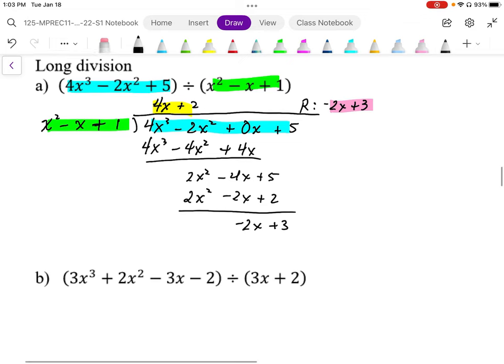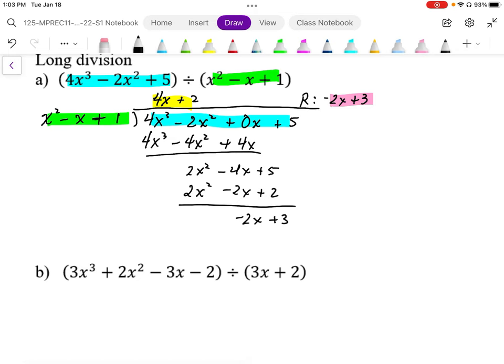We know that 4x + 2 times our divisor plus the remainder equals the original polynomial 4x³ - 2x² + 0x + 5. So it's important to be able to rewrite it in its division statement or multiplication statement.